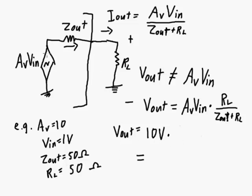Then our AV V in is still going to be 10 volts, but now our Z out and RL are equal, so that 10 volts is going to be split between the two. What we end up with is 50 ohms for RL, 50 ohms for Z out. We're going to work it out to 5 volts.